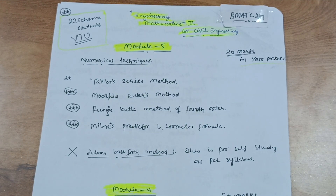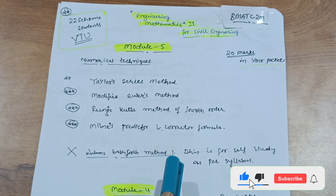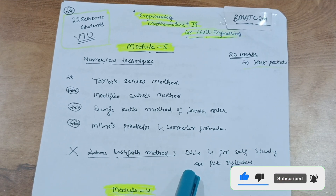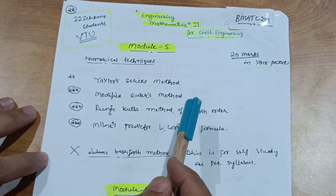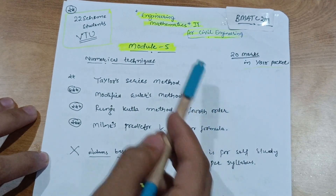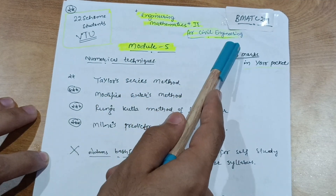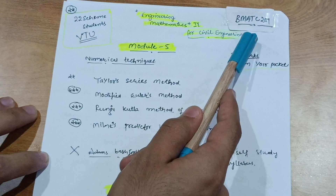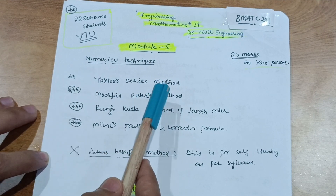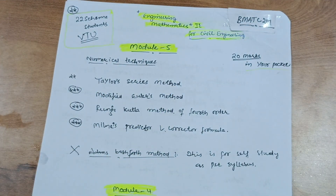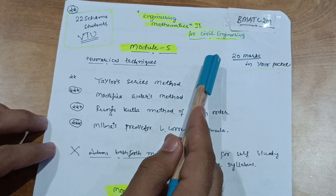Hello, my dear friends, welcome back. You are watching the Motionally 14 channel. I am making passing strategies for VTU students, especially for the math series and other subjects of mechanical engineering, and also for different branches. Today in this video I want to discuss some passing hacks for Engineering Mathematics 2, which is for civil engineering branch students. The subject code is BMATC201, and it is for the 22 scheme students. Let me tell you how many modules are the passing modules in this particular subject.